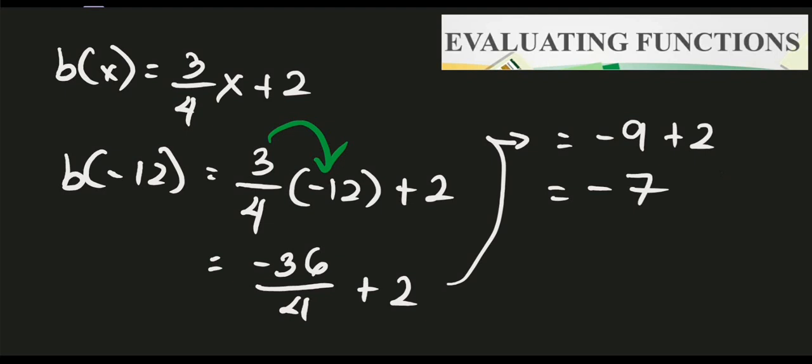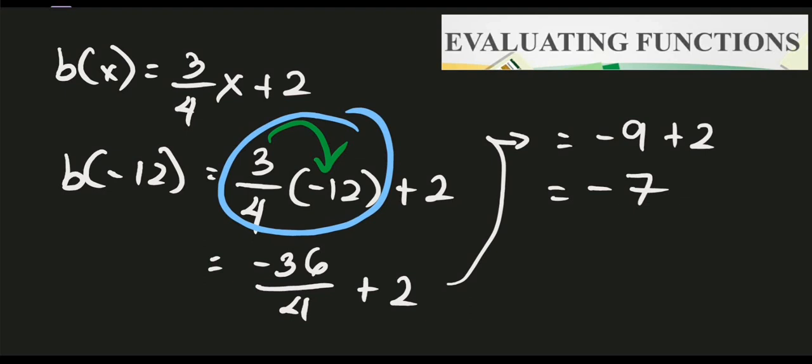Same procedure, students. If we encounter an example with a fraction, just multiply the numerator by the whole number and divide by the denominator, then simplify. The final answer for this one is negative 7. I encourage you to pause this video and try the next one on your own.